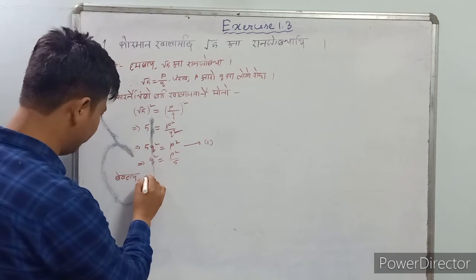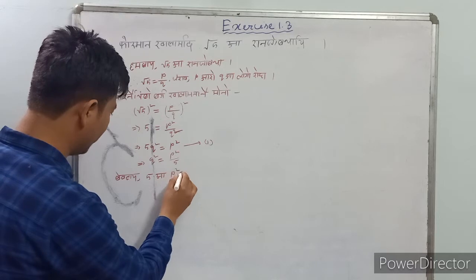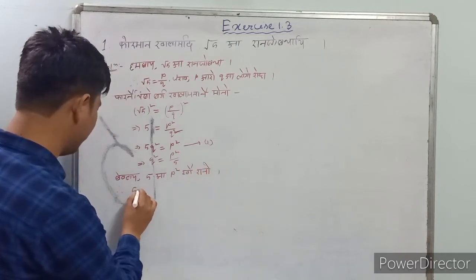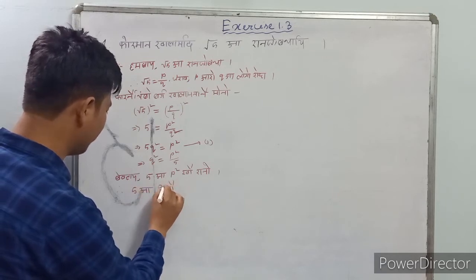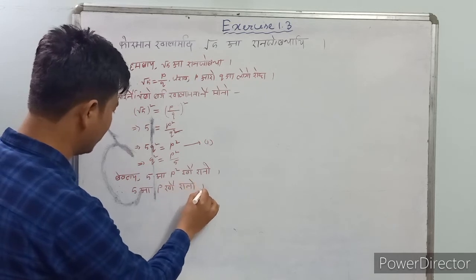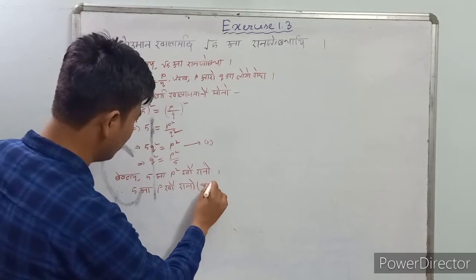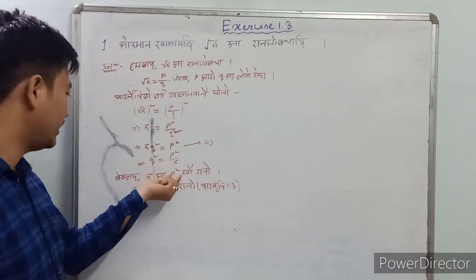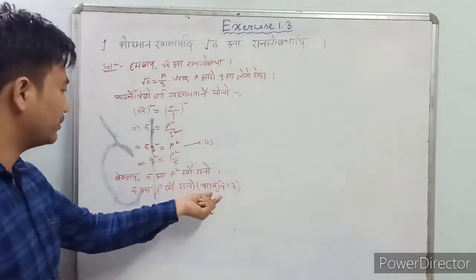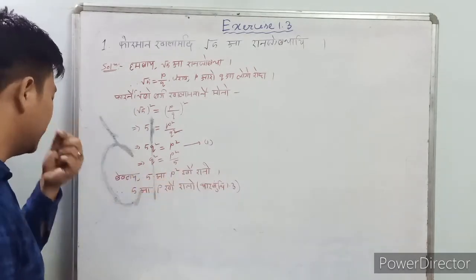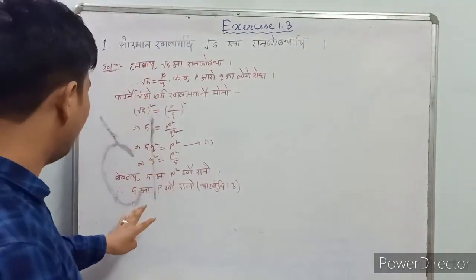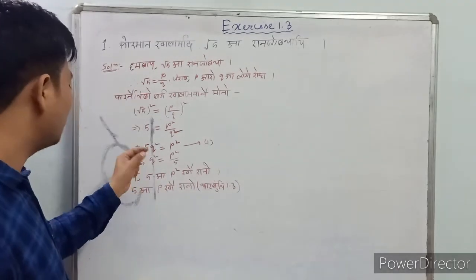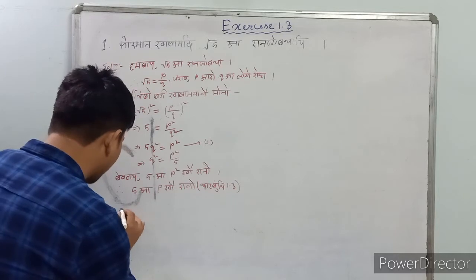So, we have 5A and 4A. So, we have 5A and 4A. So, we have 5A and 5A.